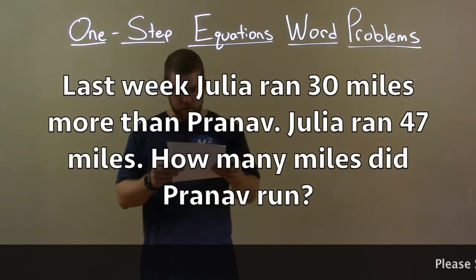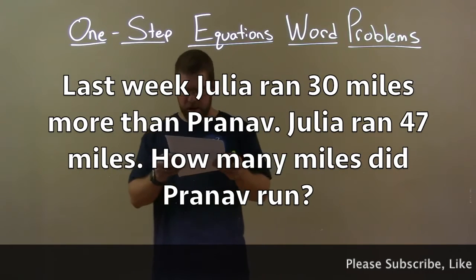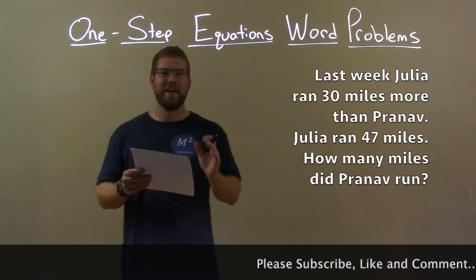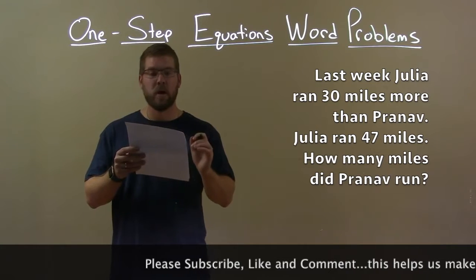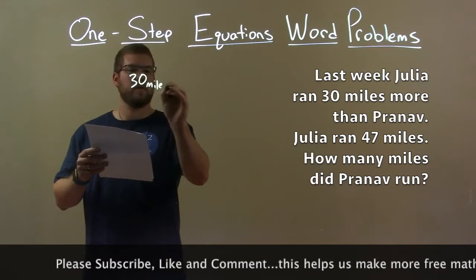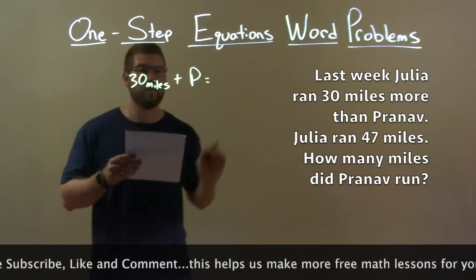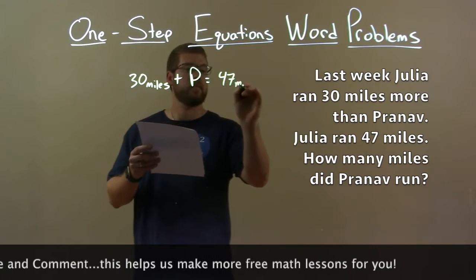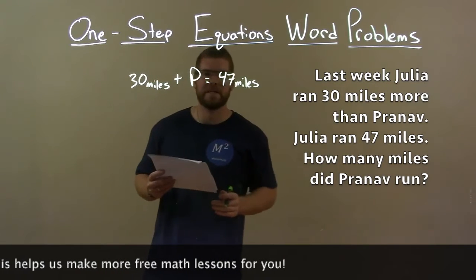Last week, Julia ran 30 miles more than Pranov. Julia ran 47 miles. How many miles did Pranov run? They tell us Julia ran 30 more miles than Pranov, so 30 miles plus the number of miles Pranov ran, P, equals how much Julia ran — 47 miles.